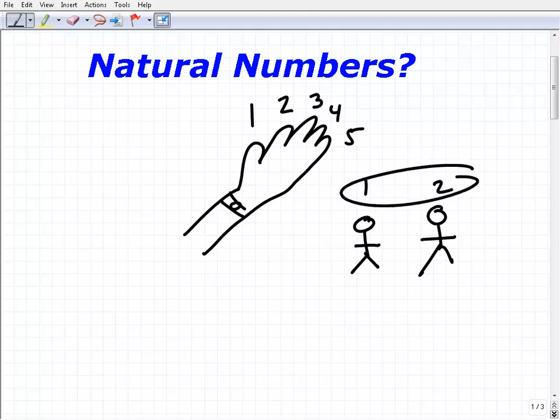So when we actually count, we are using the natural numbers. Oftentimes, the natural numbers are referred to as the counting numbers. Okay. So that's what natural numbers are. It's the actual concept of counting something.